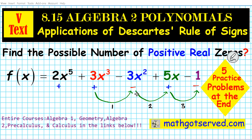The kind of problem we'll be solving in this presentation is finding the possible numbers of positive real zeros for a polynomial function. Don't forget to hit the like and the subscribe buttons, and there are five practice problems at the end of this tutorial to demonstrate mastery of the contents.